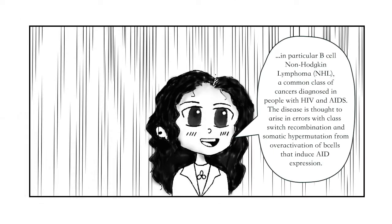In particular, B-cell non-Hodgkin lymphoma, NHL, a common class of cancers diagnosed in people with HIV and AIDS. The disease is thought to arise in errors with class-switch recombination and somatic hypermutation from over-activation of B-cells that induce AID expression.